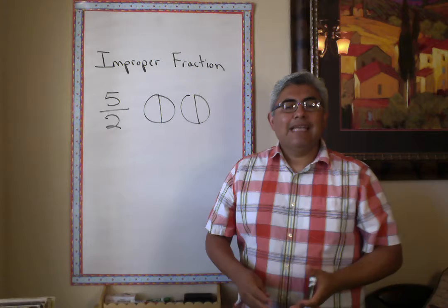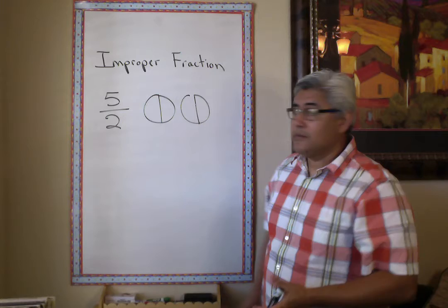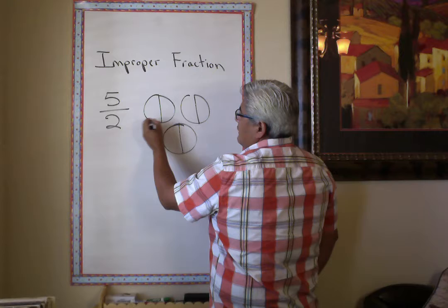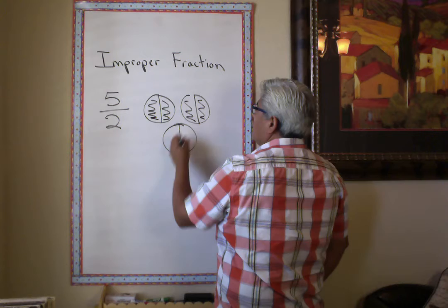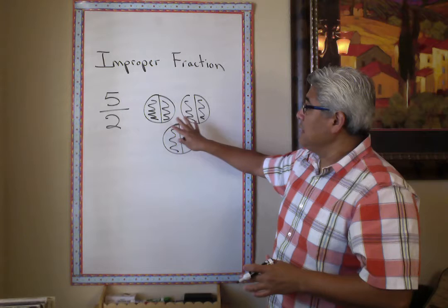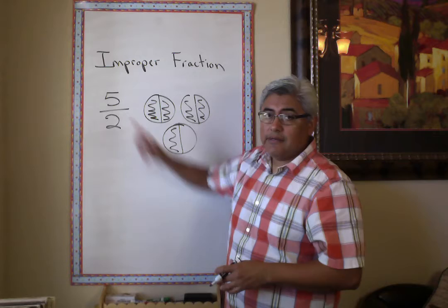Our numerator is telling us that there are five pieces that we're going to get, so it's kind of hard to really get five from two. So we're definitely going to need several wholes. That means we need to count one, two, three, four, five — so you're going to actually have wholes. In this improper fraction, we're going to need three wholes, because we need five pieces.